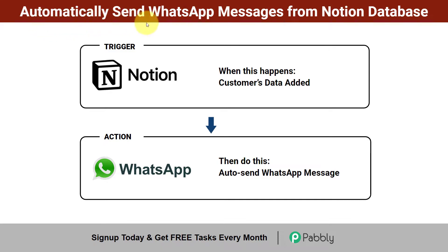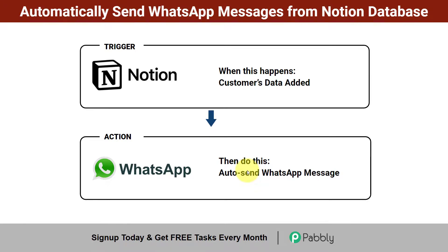In this video we will learn how you can automatically send WhatsApp messages from a Notion database. Assume that you are adding your customers' data into Notion and you also have to send WhatsApp messages to all your customers. You have two choices: either copy the details and compose a message in WhatsApp, sending it to each customer one by one, or create an automation between Notion and WhatsApp so that whenever customer data is added, messages get sent automatically without doing anything manually.